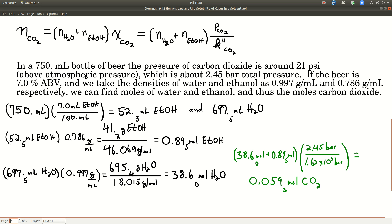So we need to know a few numbers, easily available. Let's say we have a 750 milliliter bottle of beer, about 20 ounces or so. Typically in a bottle of beer, the pressure, the head pressure in there is about 20, 21 psi above atmospheric pressure, so it's 21 psi plus atmospheric pressure, which is about 14 and a half psi. When you convert that total pressure to bars, it's about 2.45 bars.